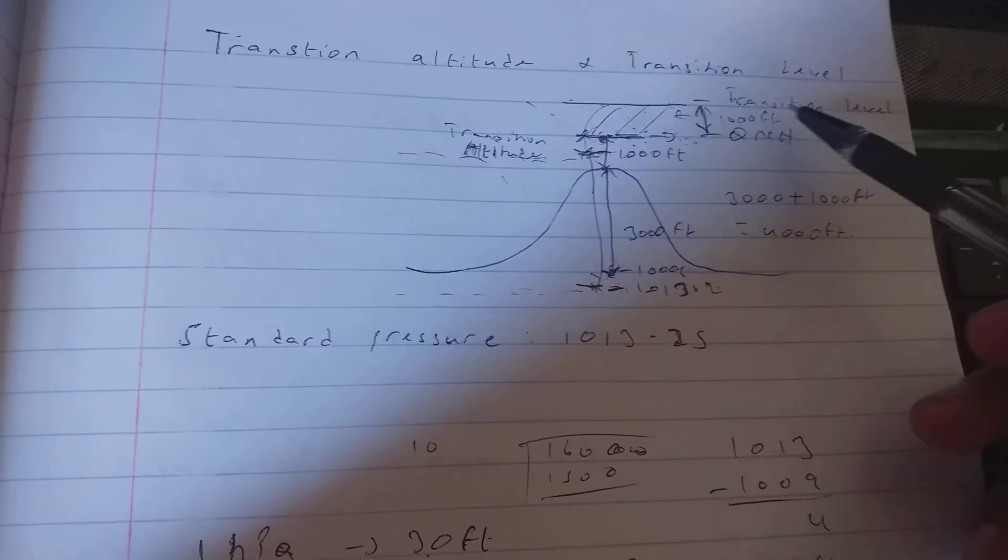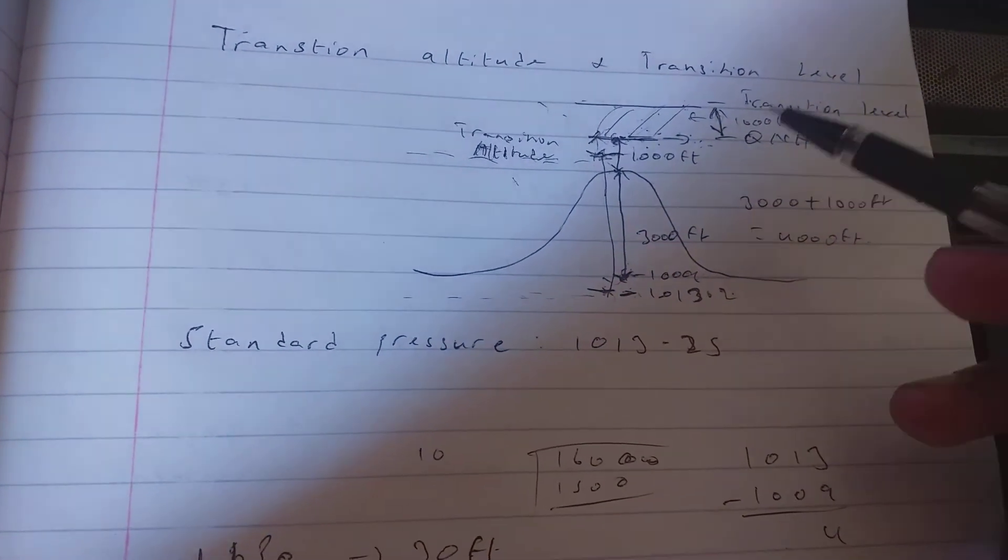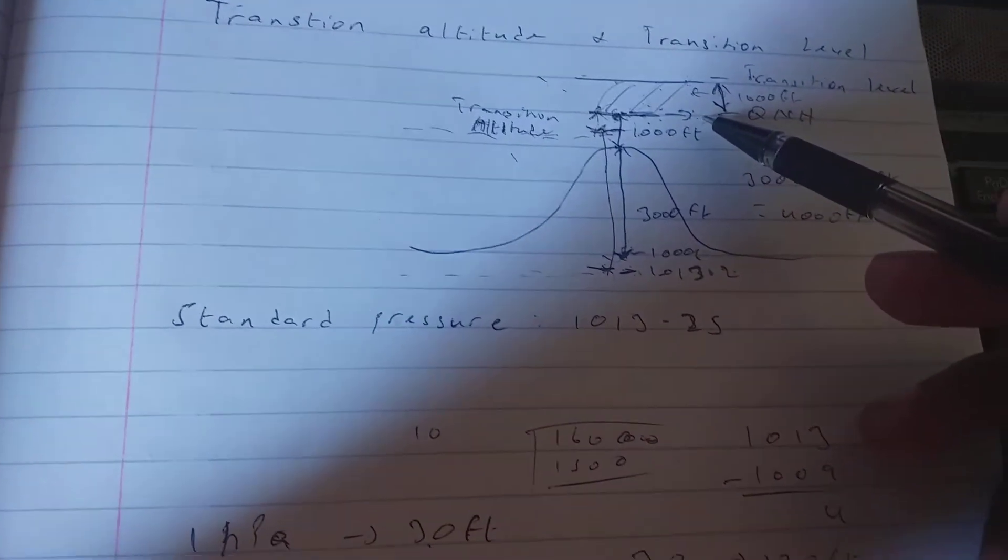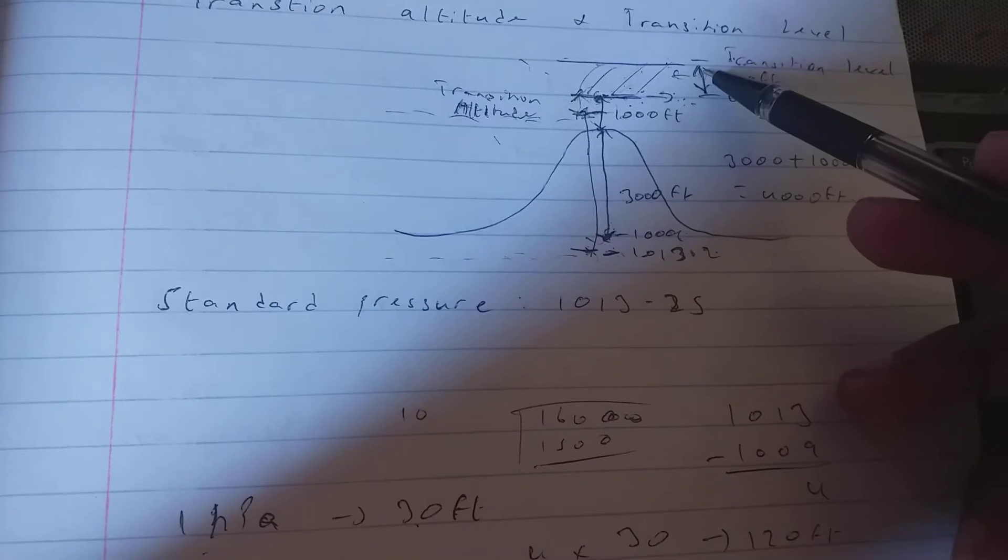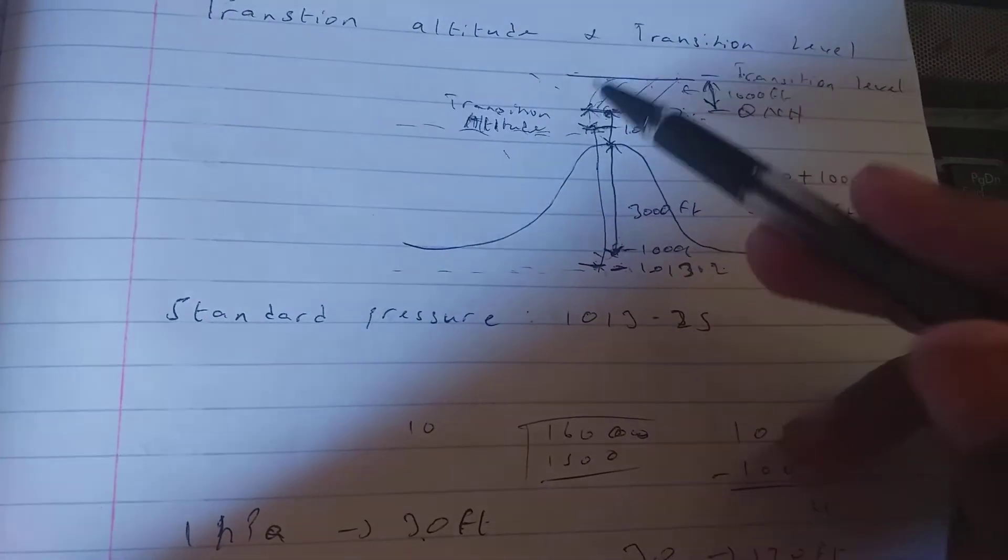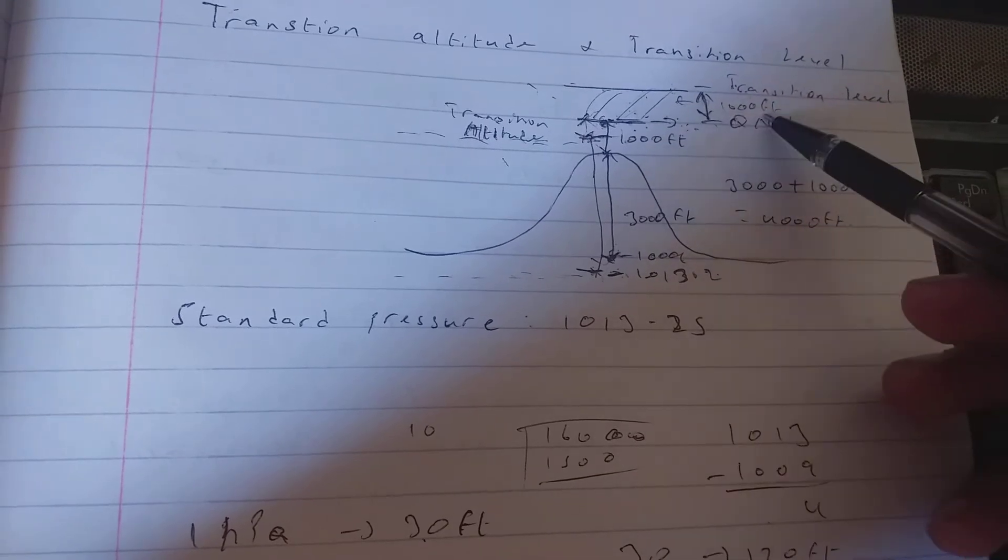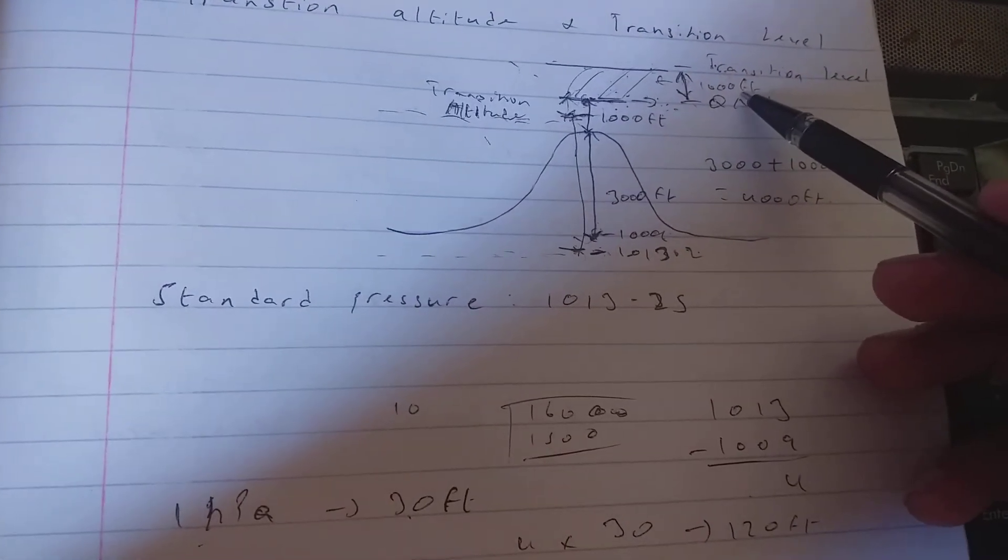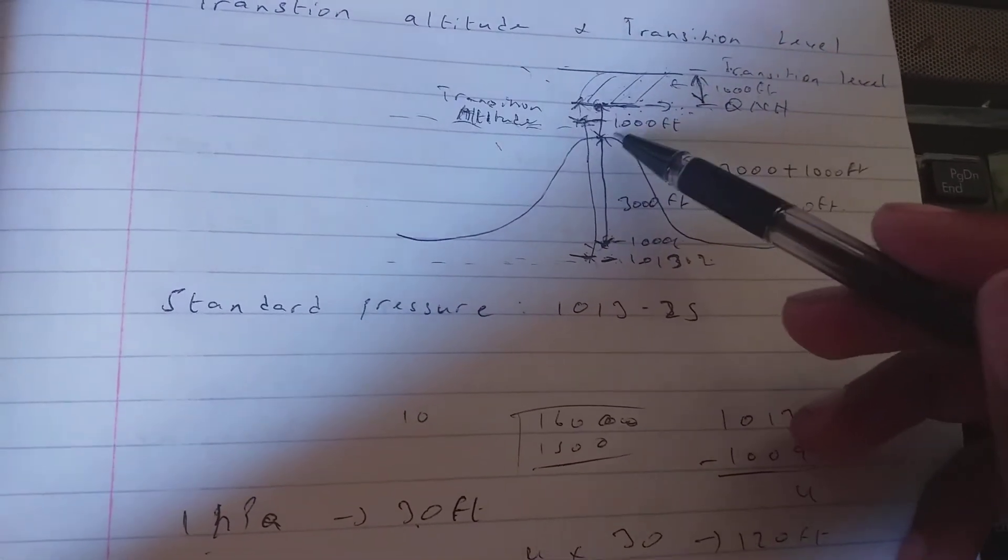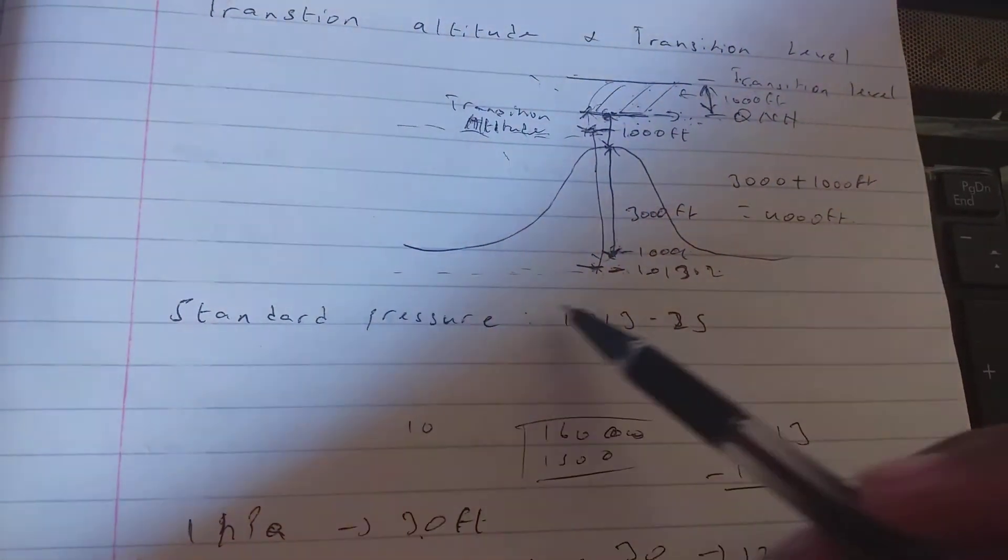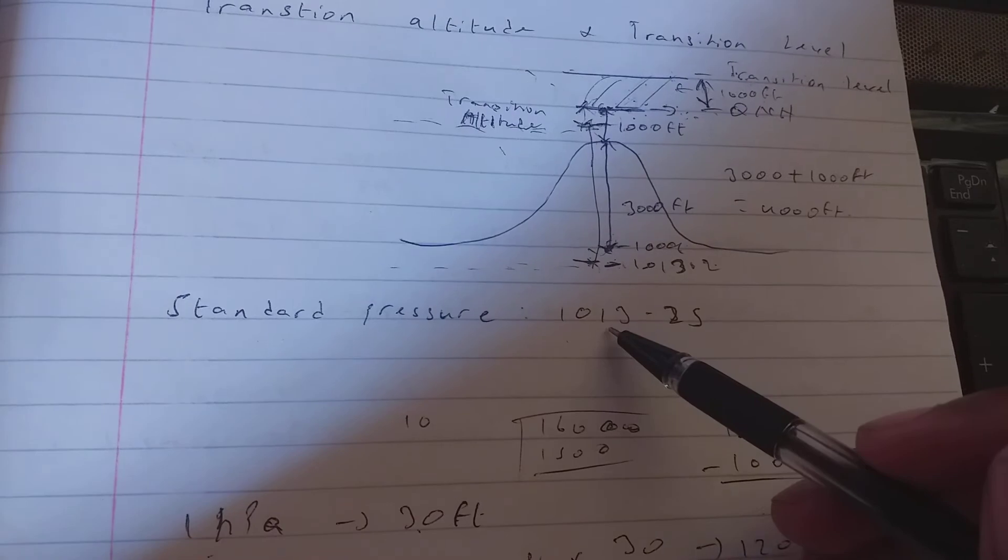For the transition level, the minimum distance between the transition altitude and the transition layer must be 1,000 feet. We must also know that the standard pressure is 1013.25 hectopascals.